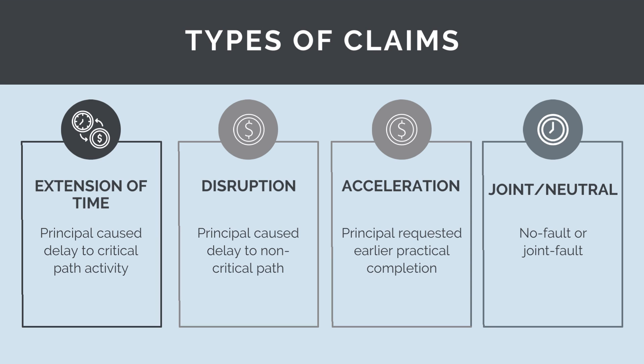A joint or no-fault claim is where both parties are at fault, or the situation is outside both parties' control — like excessive wet weather. Under a no-fault claim, the practical completion date is pushed back, but the contractor will not receive additional money.